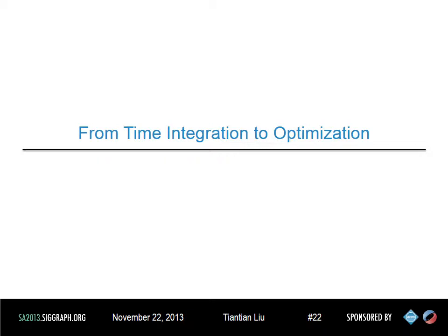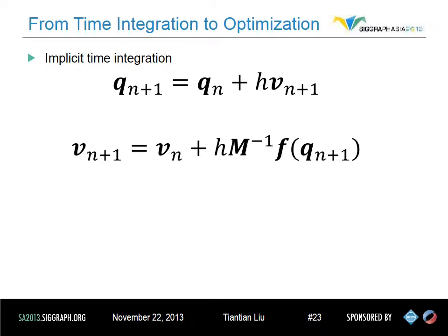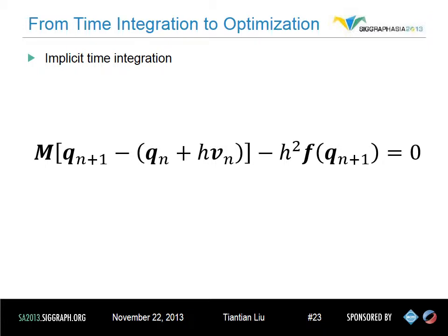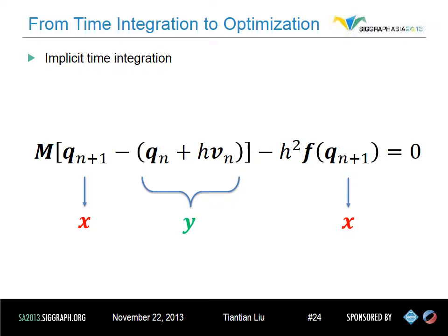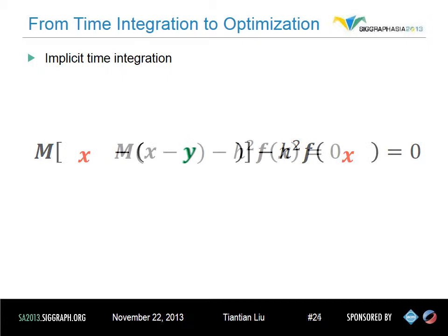Let's formulate the time integration problem as an optimization problem. Our method also starts from implicit time integration, where h is the time step size, m is a diagonal mass matrix, q, v, f are position, velocity, and force respectively. We substitute the first equation into the second one to eliminate the unknown v_{n+1}. Now x (which we write for q_{n+1}) is the only unknown. We aggregate q_n + h*v_n into a quantity y. We can see that y is an inertial term that predicts the next-time position of all vertices if they follow their current velocities without any forces.